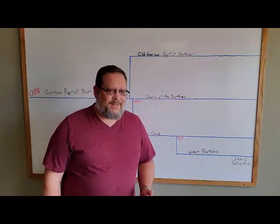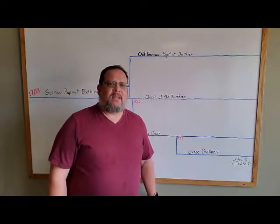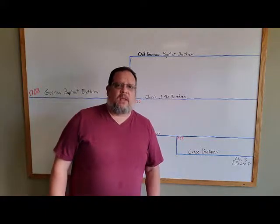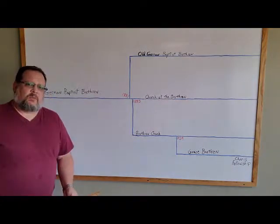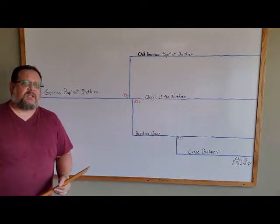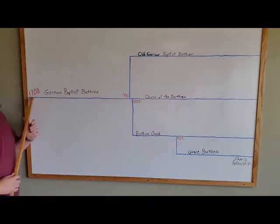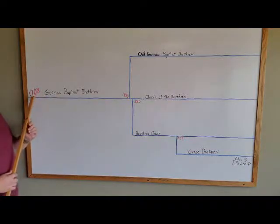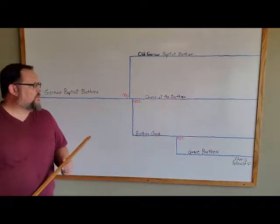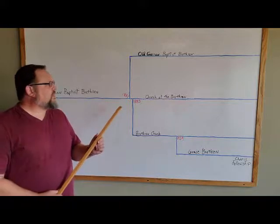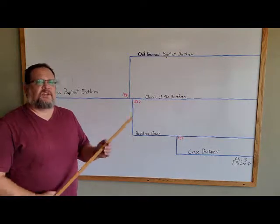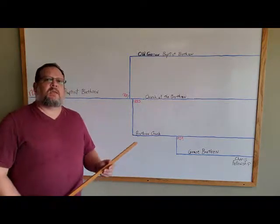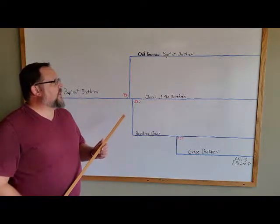It's also where they split. Between 1881 and 1883, there was quite a major split in the German Baptist Brethren, and this is what I depict here on this chart. Of course, we have the German Baptist Brethren, founded in 1708 by Alexander Mack. But then, in 1881 through 1883, three divisions happened within the German Baptist Brethren.